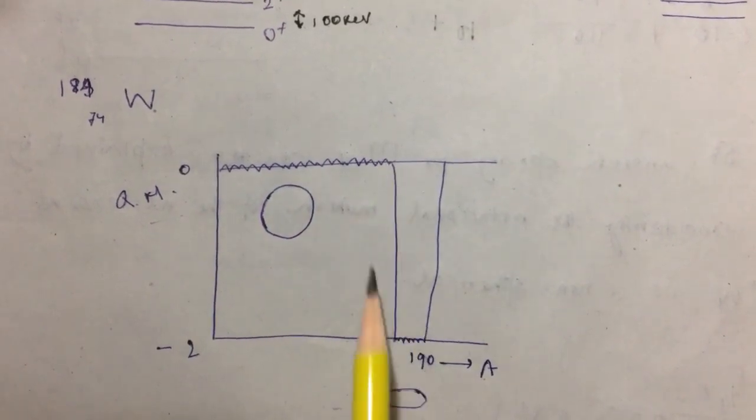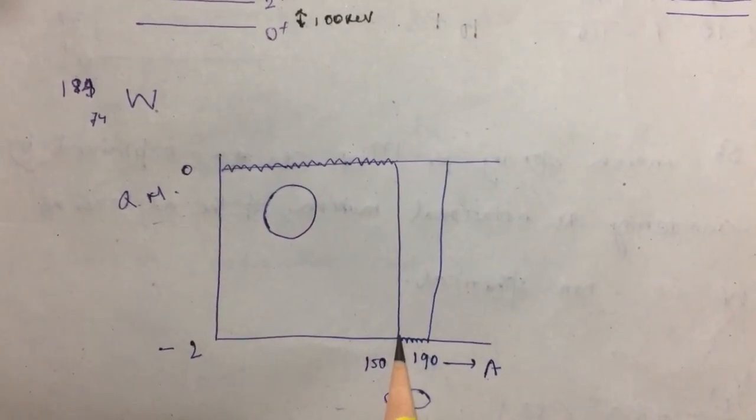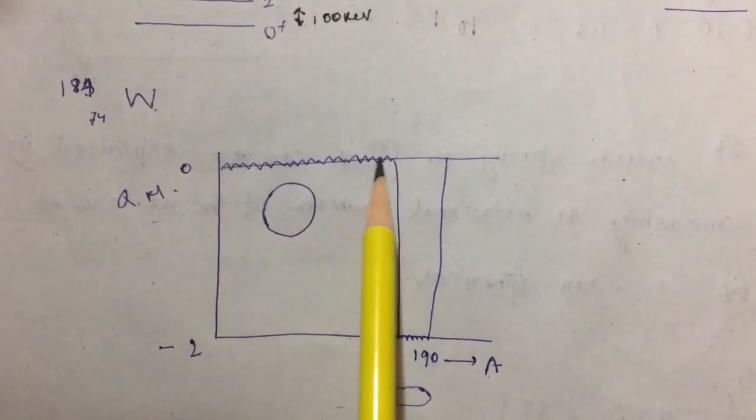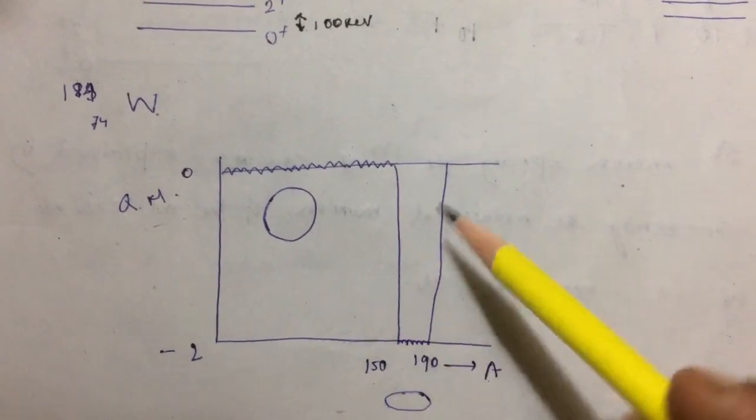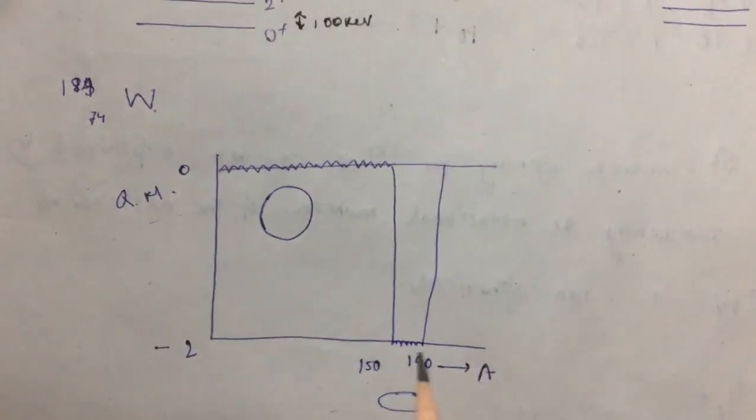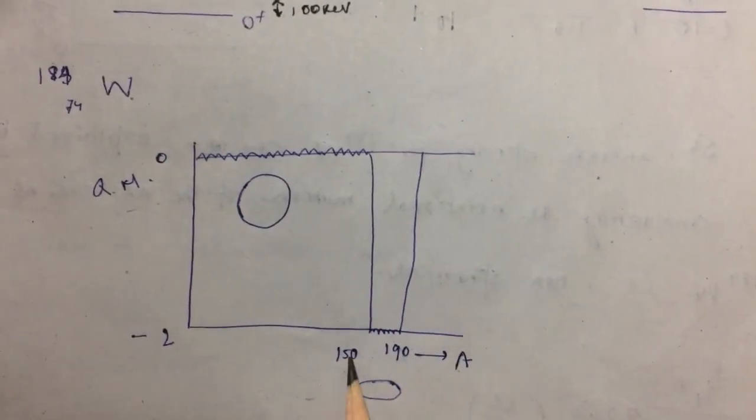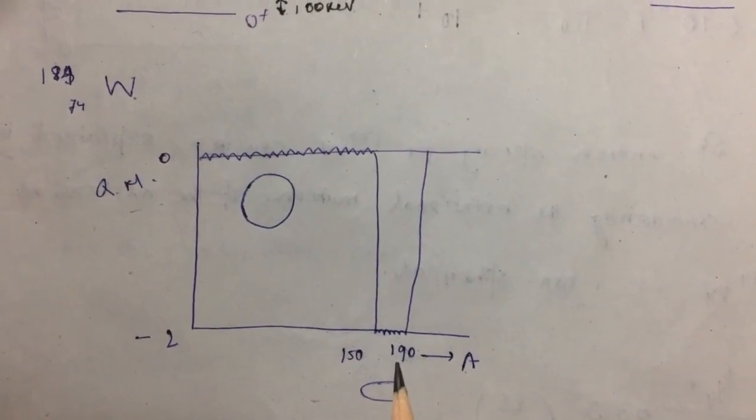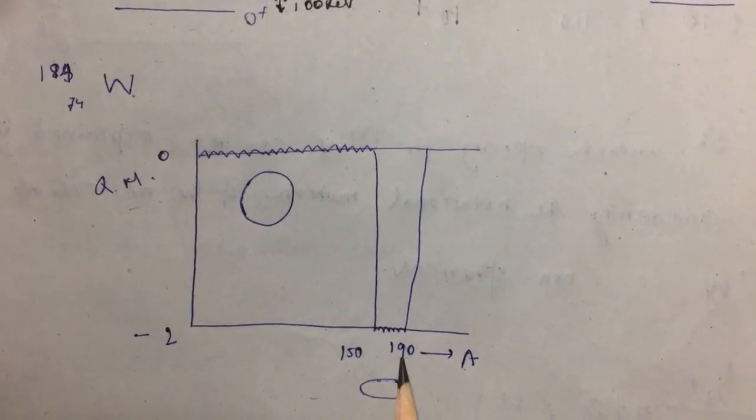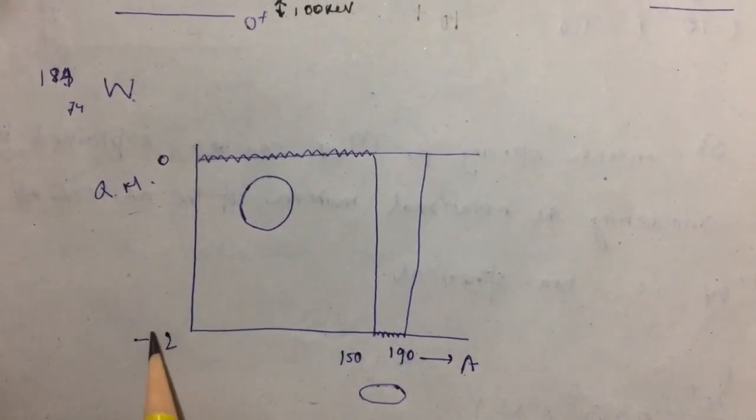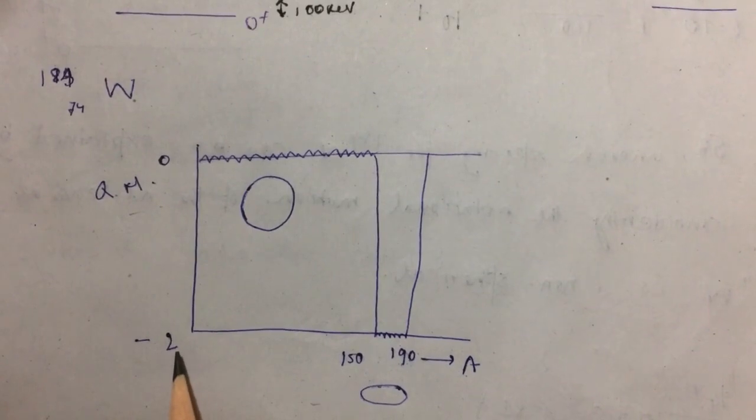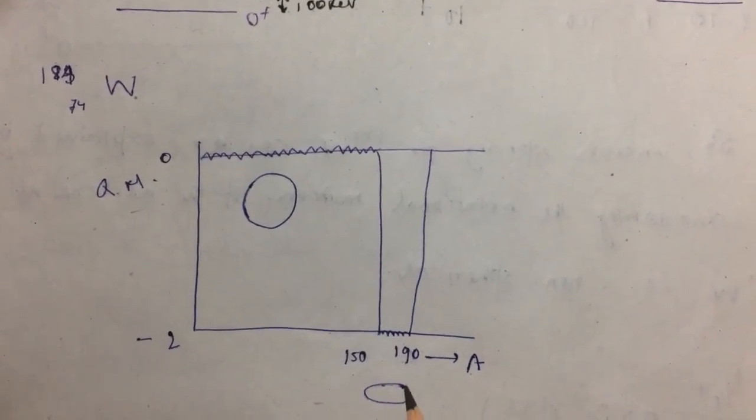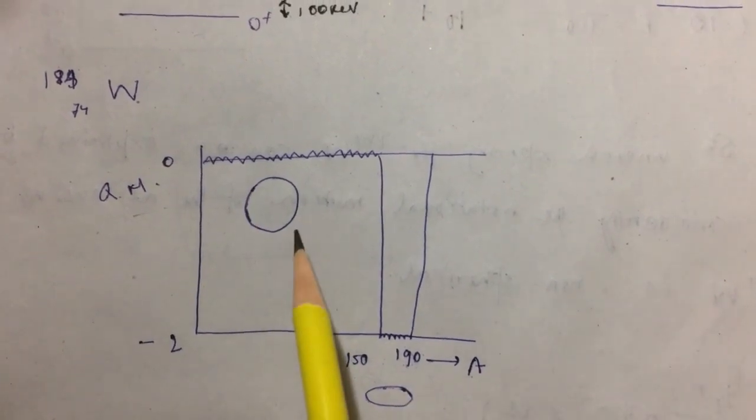Quadrupole moment along this line is having a zero value, so nuclei up to this A value are all spherical as they are having almost zero quadrupole moment. Then suddenly this value drops, and between A equal to 150 to 190, the nucleus is having a finite quadrupole moment.